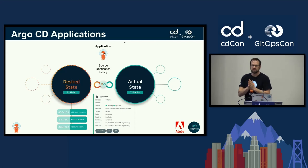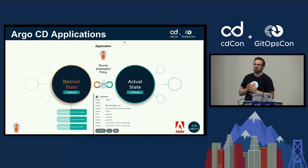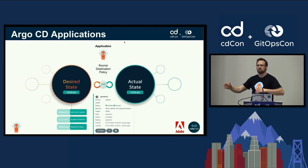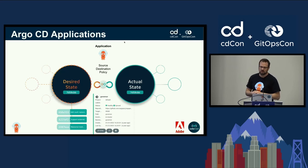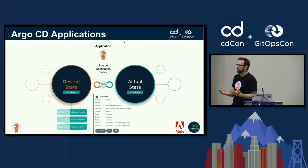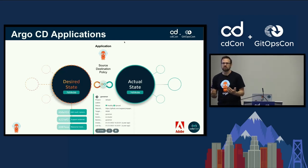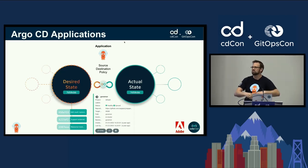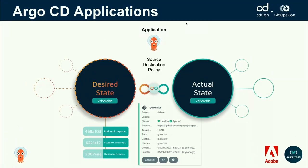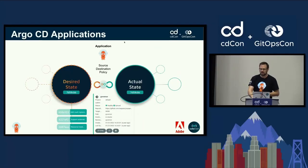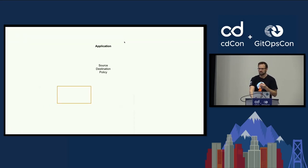How does Argo CD work? How many of you are more than casual Argo CD users? A good chunk of the audience, but some are still new to it. Even if you've been doing Argo CD for a long time, this concept might feel a little bit new. The concept of an application in Argo is really a policy. You have your desired state defined in Git — manifests, Helm charts, whatever — and your actual state living on your cluster. The application is the source and definition of that policy.